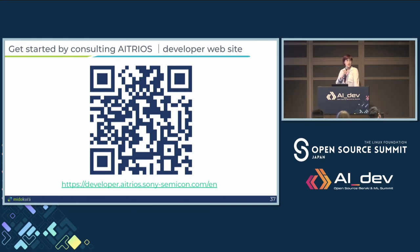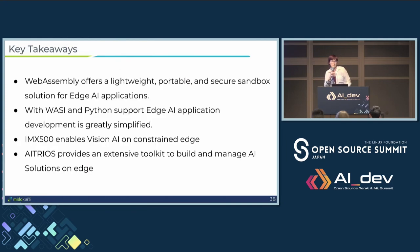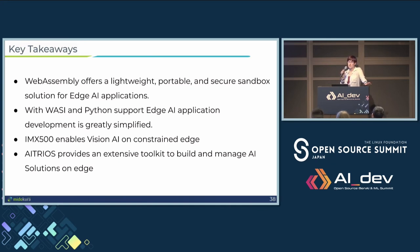All those tools are available through the links on the previous slide or through their descriptions on the ITRIUS developer website. I highly recommend you look for details via this QR code. If you've already tried them, I'll gladly accept questions and answer them. Before that, let me give some key takeaways. In the first part, you heard about how WebAssembly helps solve problems in developing Edge AI solutions and provides a lightweight, portable, and secure sandbox solution, and about efforts on simplifying the process by introducing WASI and Python support.